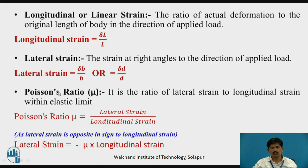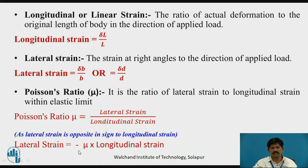Poisson's ratio, denoted by mu, is the ratio of lateral strain to longitudinal strain within the elastic limit, given by lateral strain upon longitudinal strain. As lateral strain is opposite in sign to the longitudinal strain, lateral strain equals minus mu times longitudinal strain.